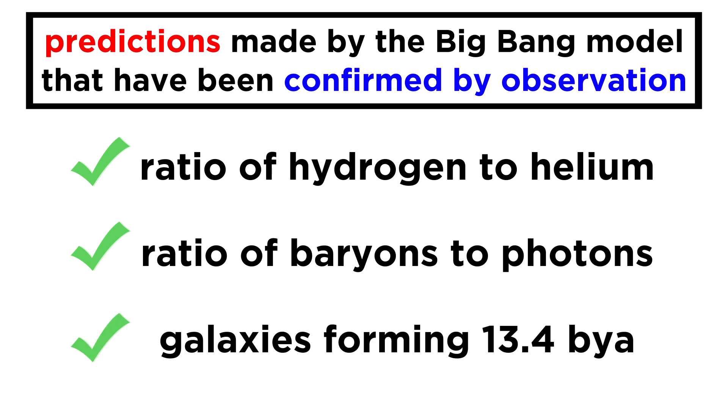The model also predicts when galaxies ought to form, about a half a billion years into the lifetime of the universe. And when we look as far out into the universe as we can, we can see these early galaxies forming 13.4 billion light years away, their light only now reaching our eyes, just as the model predicts. The calculations associated with these kinds of predictions are too complicated to be shown here, but if you go on to study astrophysics and cosmology, they will be examined in detail.